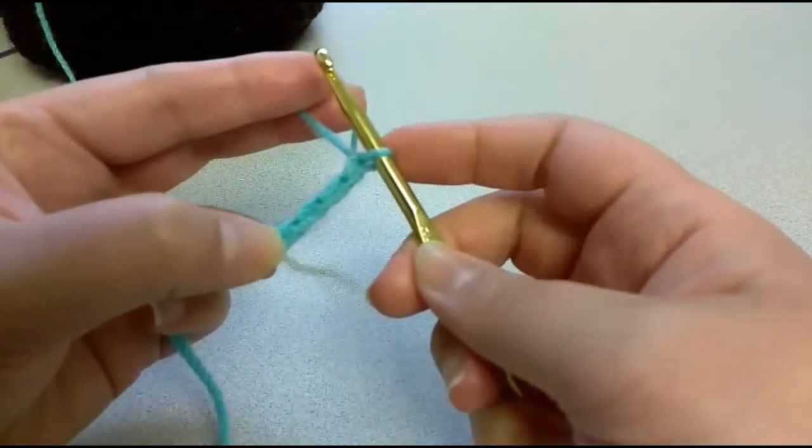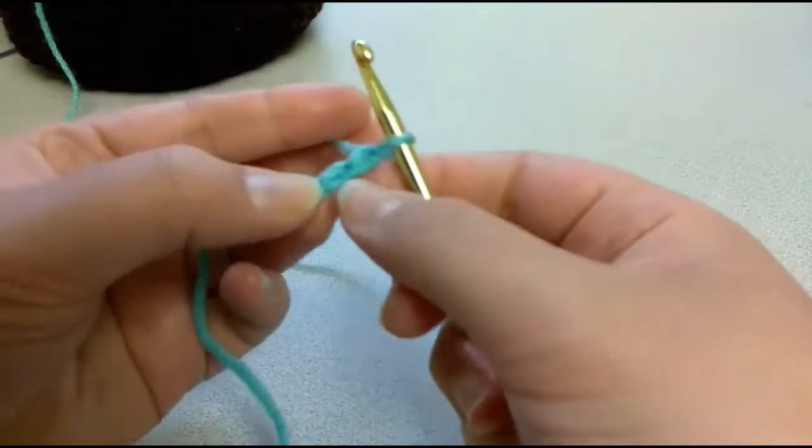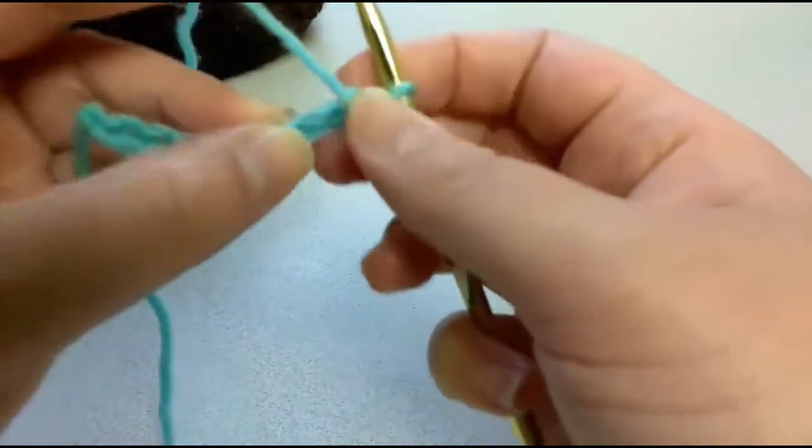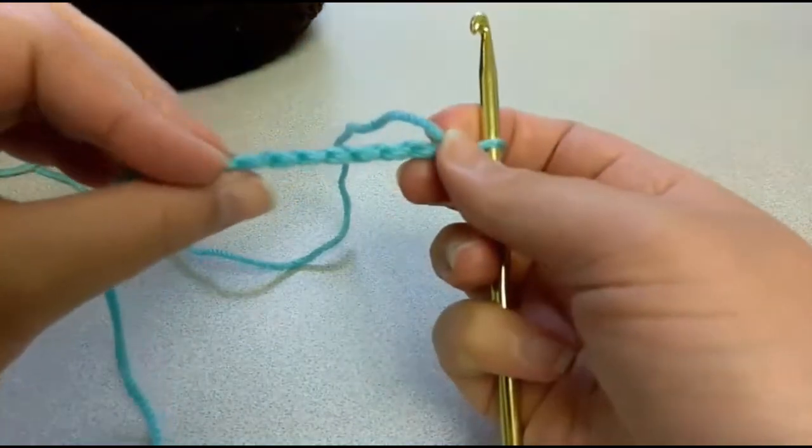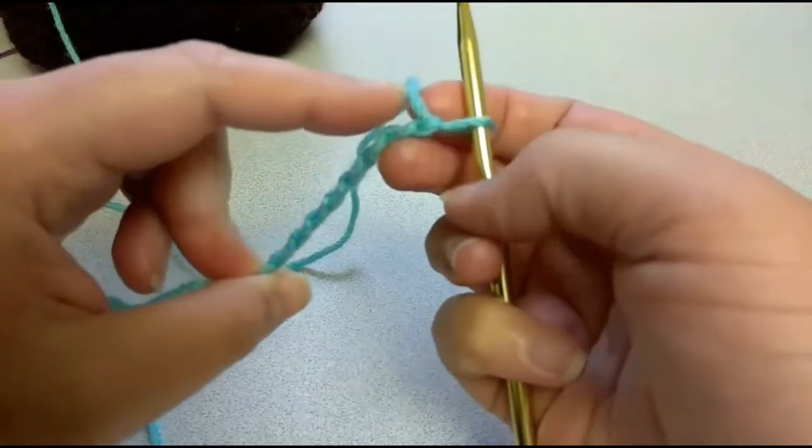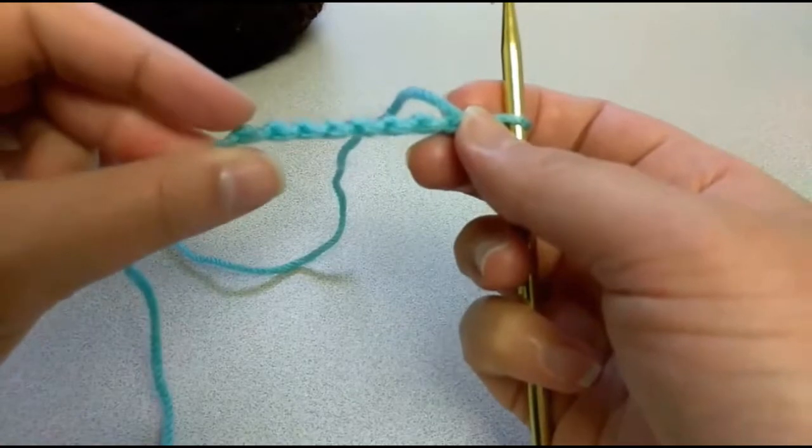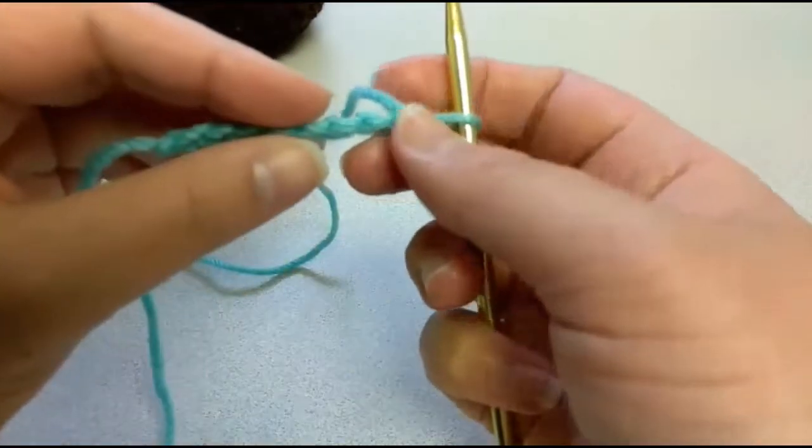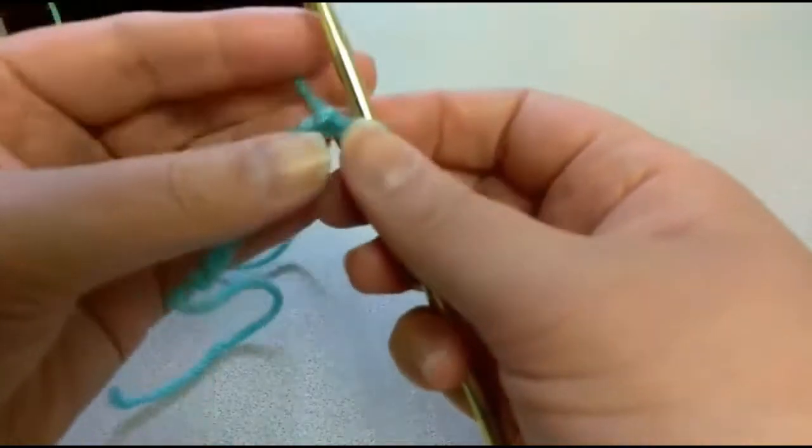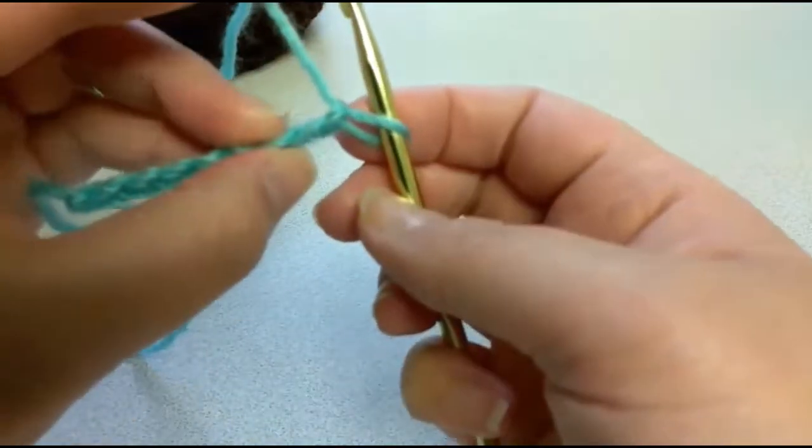Now remember, this is the first stitch. So what we're going to do is we're going to skip one and we're going to go into the second chain. But instead of going into the chain, we want to go, if we turn our work around, you're going to see all those chains have bumps, right? Bump, bump, bump, bump, all the way across. Or some people, I think you guys call them hyphens? Yeah, I think some call them hyphens. But those are what we want to go into. Because by going into that one, then the bottom of our work will be that. And that's what we want. So we're going to skip one and we're going to go into the second back bump.